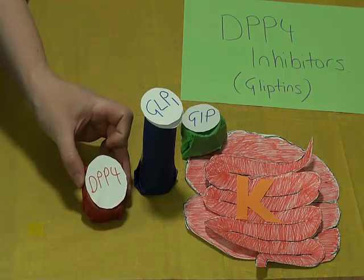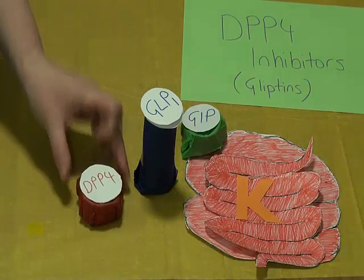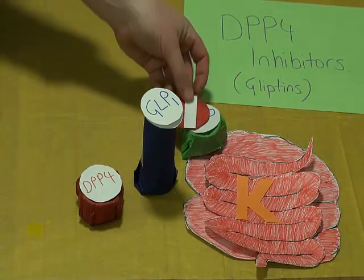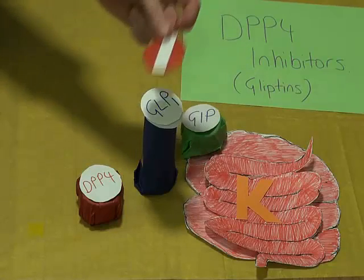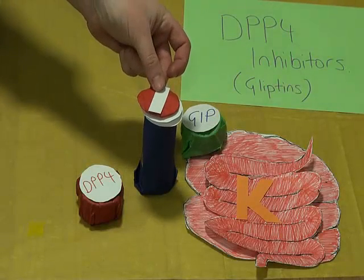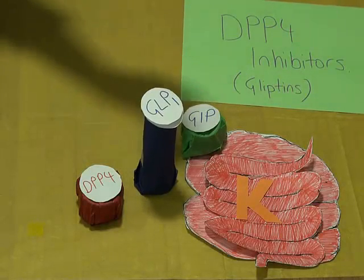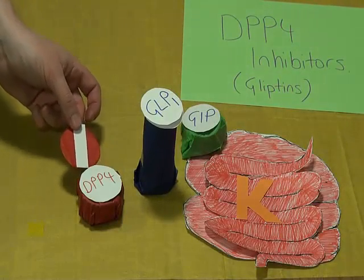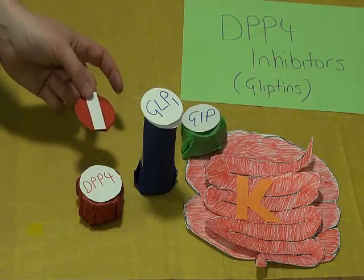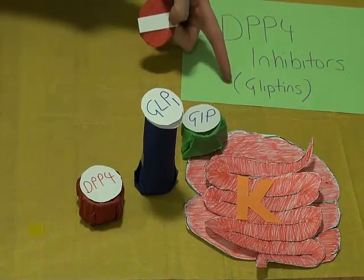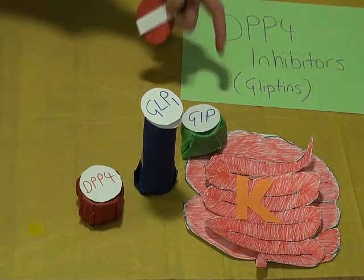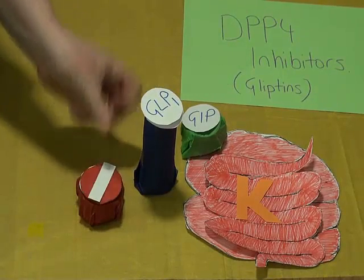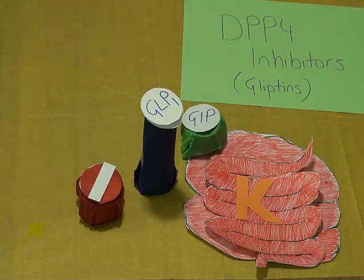DPP-4 inhibits GIP and GLP-1, and it is at DPP-4 where gliptins have their effect. They competitively inhibit DPP-4,